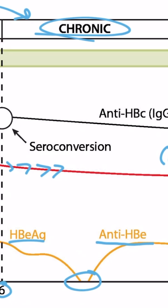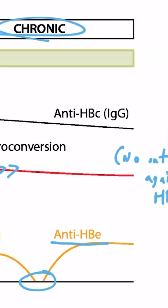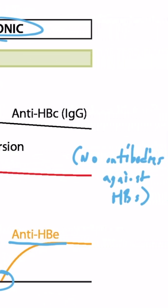Remember, the E antigen indicates high viral replication. Thankfully, in these chronic patients, when they develop antibodies against the E antigen, they have low transmissibility, or low infectivity, and they're not as contagious.